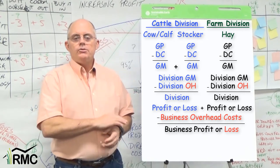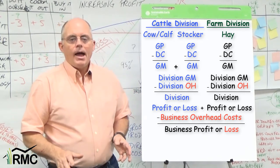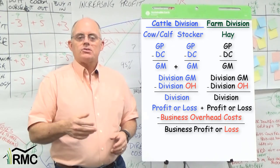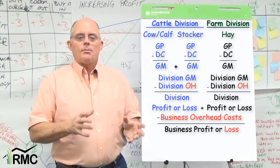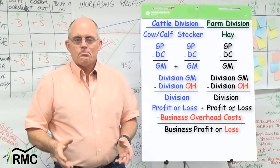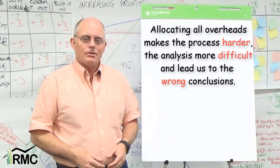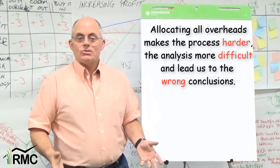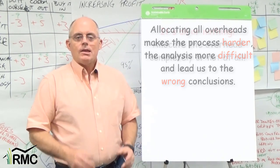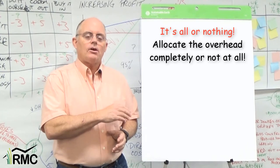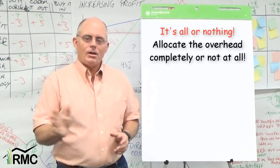When in doubt, don't allocate the overhead. Allocating overhead costs to the divisions gives us a mistaken notion that the numbers will have more meaning, but all it does is make the process harder and the analysis more difficult. Worse yet, it leads us to the wrong conclusions. If you are ranching for profit, you will either allocate overhead costs completely or not at all.